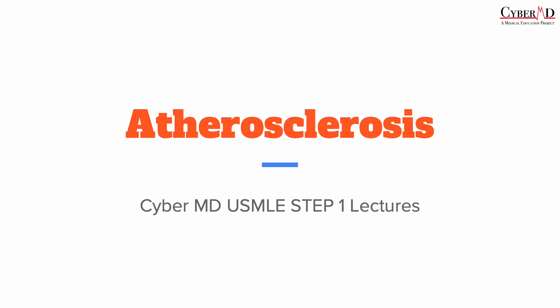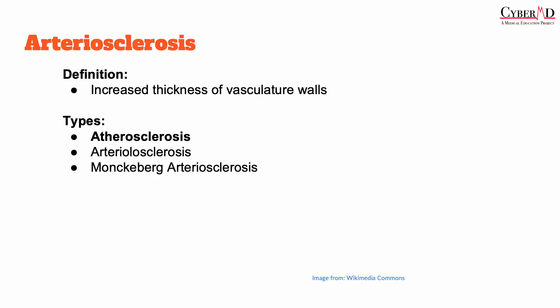Atherosclerosis is a specific type of arteriosclerosis. Arteriosclerosis is very simply the thickening of the walls of the blood vessels, leading to hardened arteries. There are three main types that you should know about for Step 1: atherosclerosis, arteriolosclerosis, and Monckeberg calcific arteriosclerosis. Let's dive into atherosclerosis.